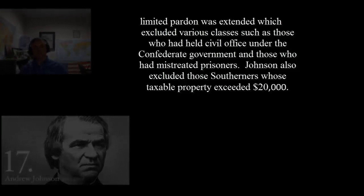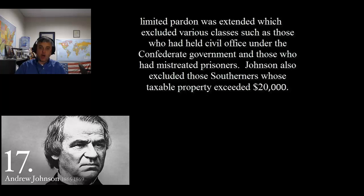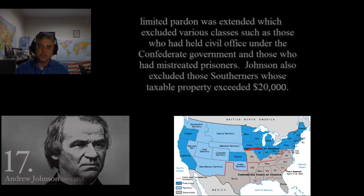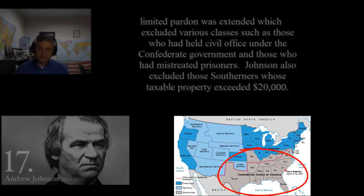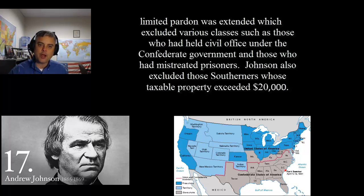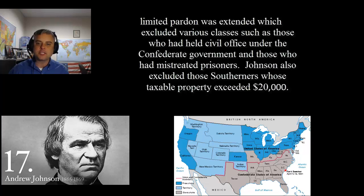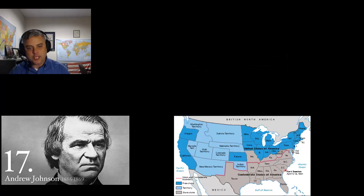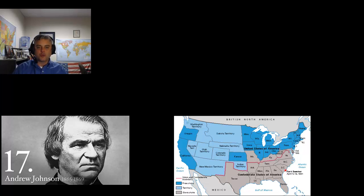As with Lincoln's proclamation on December 8th of 1863, a limited pardon was extended, which excluded various classes — such as those who held civil office under the Confederate States of America, those states that had seceded from the Union, and those who had mistreated prisoners. Johnson also excluded those Southerners whose taxable property exceeded $20,000. To those exempted from the general pardon, there remained the possibility of special pardon by petition, and much of Johnson's time was occupied in granting thousands of these special pardons. Throughout his administration, Johnson granted pardons to former Confederates in wholesale lots, and even replaced several district military commanders whose radical sympathies offended him.